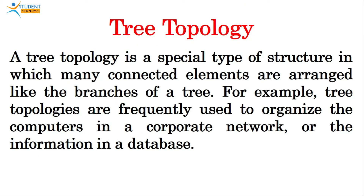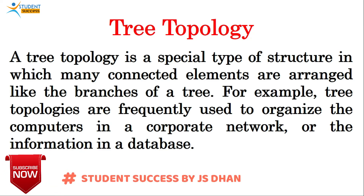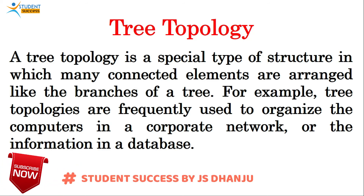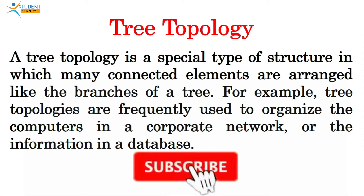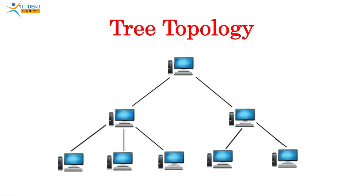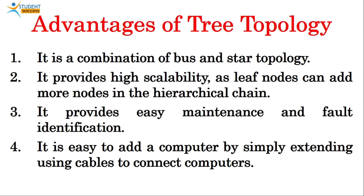Next is tree topology. A tree topology is a special type of structure in which many connected elements are arranged like the branches of a tree. Tree topologies are frequently used to organize computers in a corporate network or information in a database. It is in a hierarchical form. Advantages: it is a combination of bus and star topology, provides high scalability as more nodes can be added in the hierarchical chain, and provides easy maintenance and fault identification.